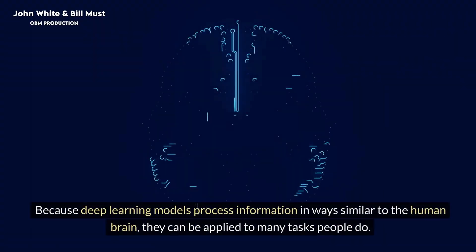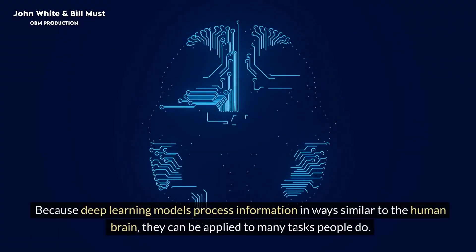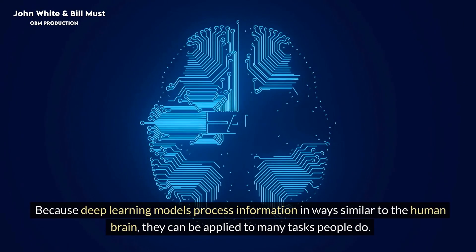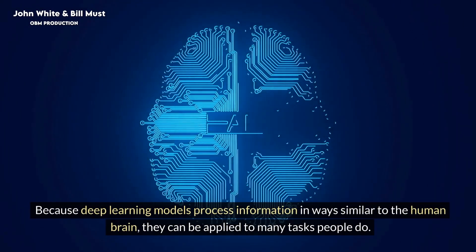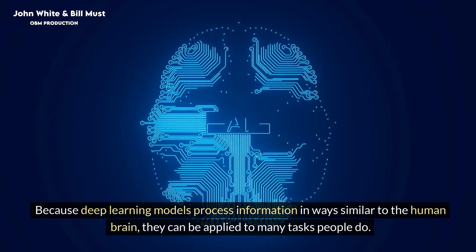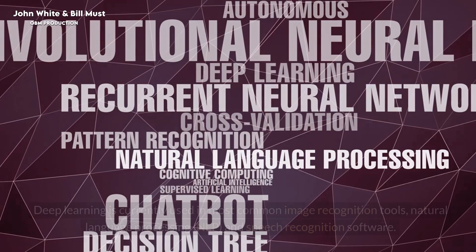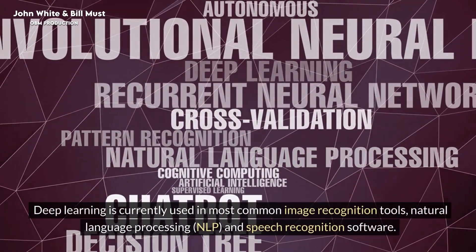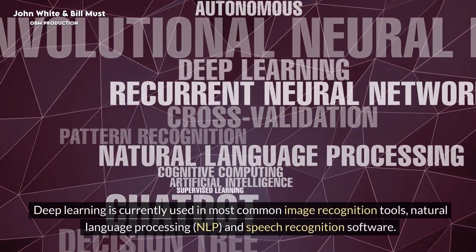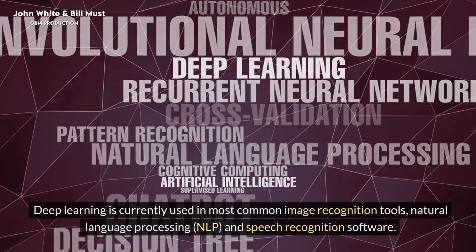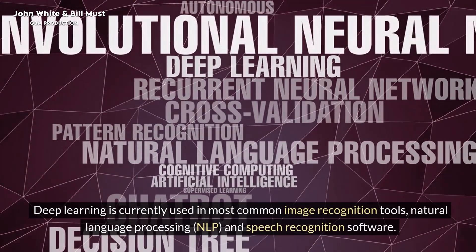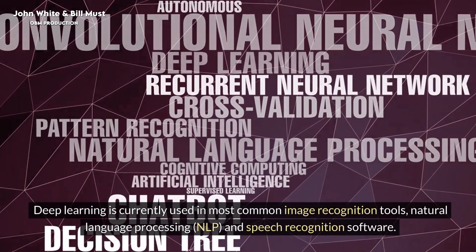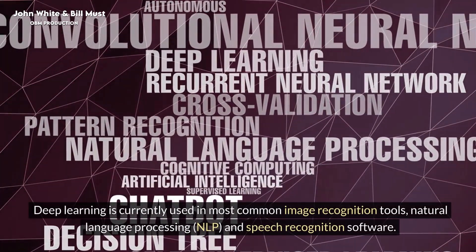What is deep learning used for today? Because deep learning models process information in ways similar to the human brain, they can be applied to many tasks people do. Deep learning is currently used in most common image recognition tools, natural language processing, and speech recognition software.